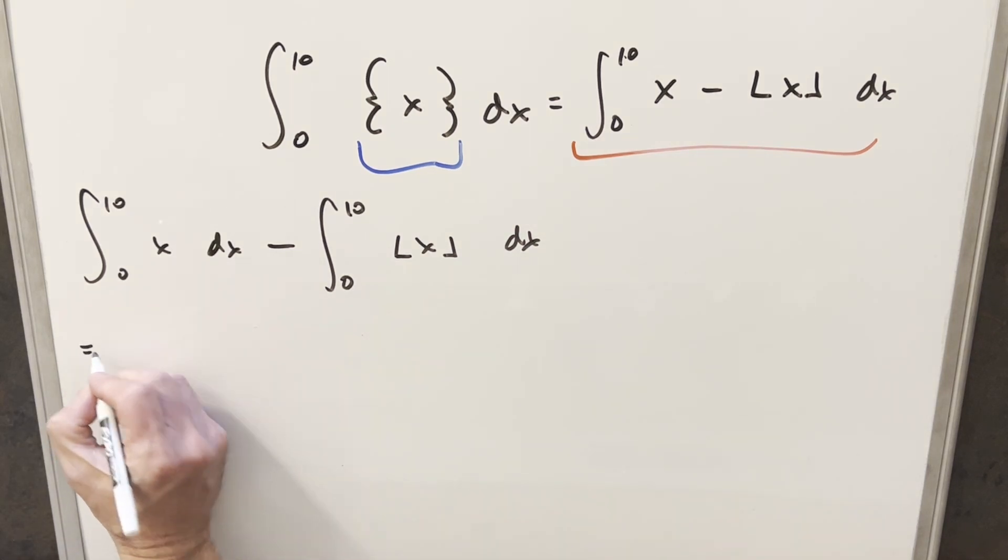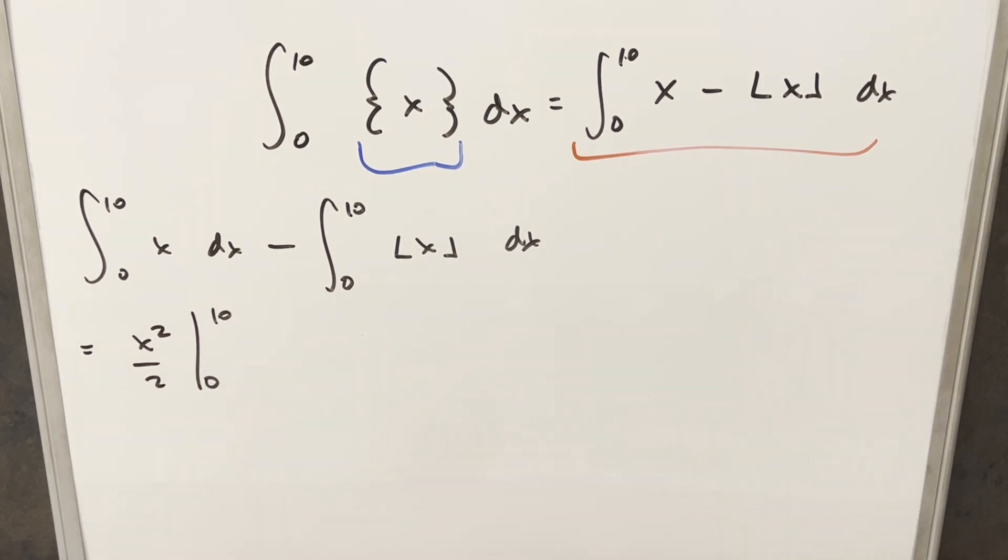Well, this here is going to be real easy. This is just going to be x squared over 2 using power rule evaluated from 0 to 10. And then here for the floor function, what I can do is break this up into 10 separate integrals. If I break it up onto integers, this is just going to become a number. So I can rewrite this like this.